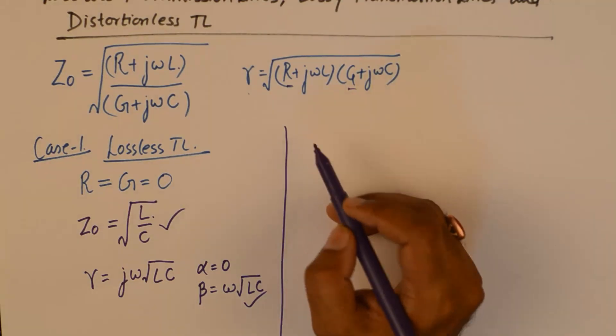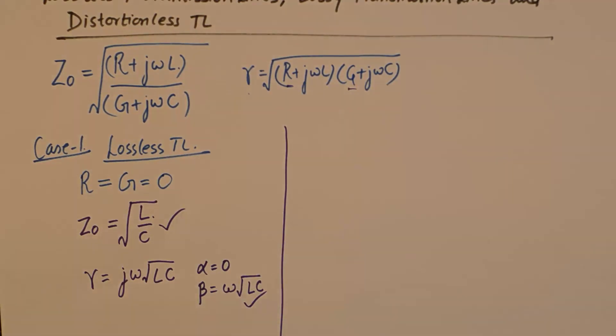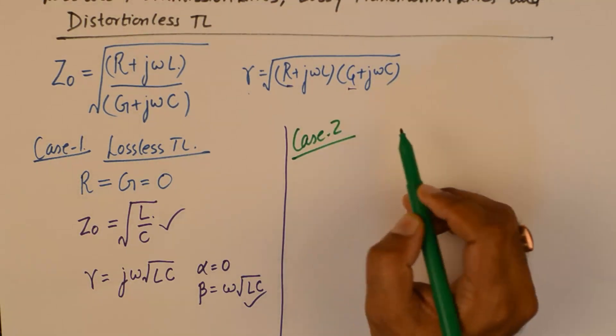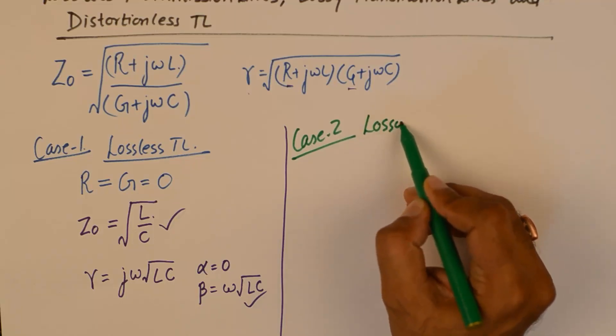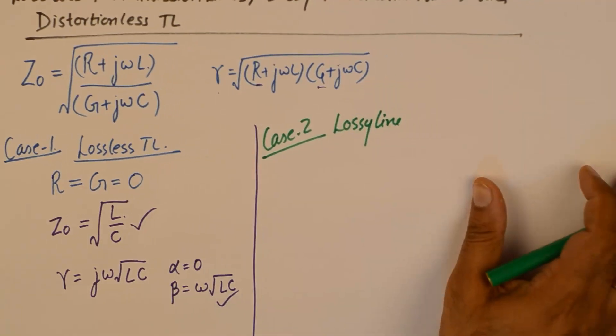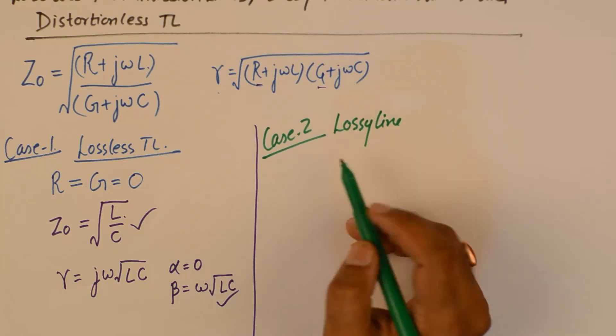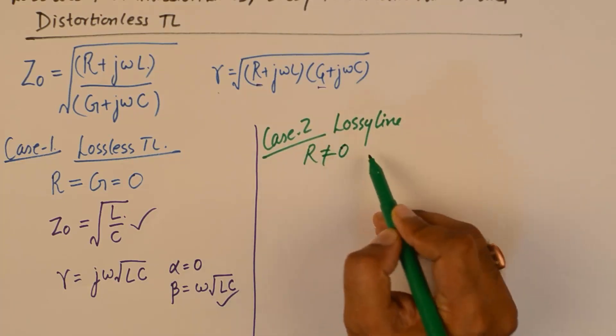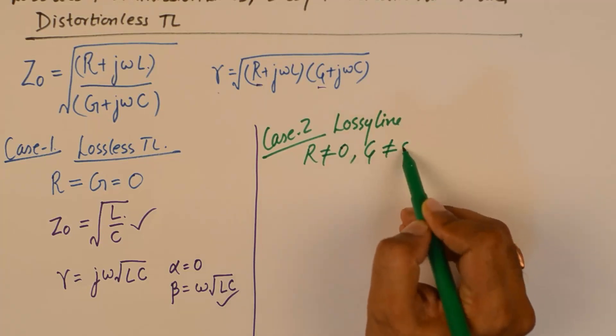Case 2 is the lossy line. It is the normal case when R is not equal to 0 and G is also not equal to 0.